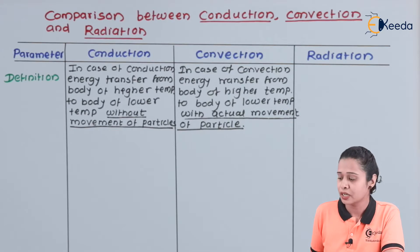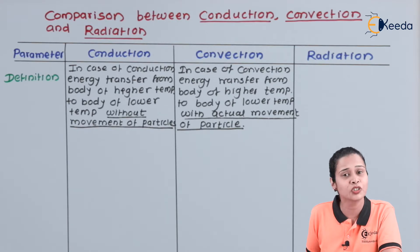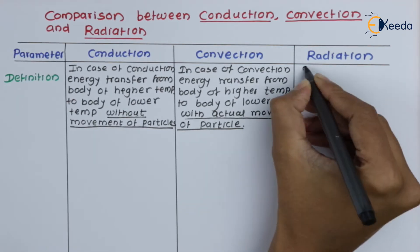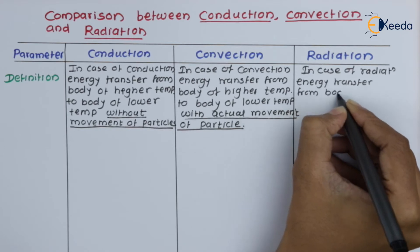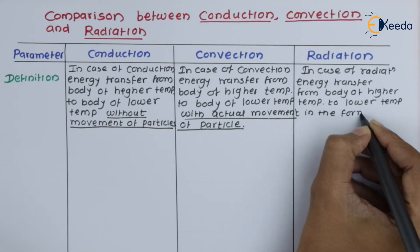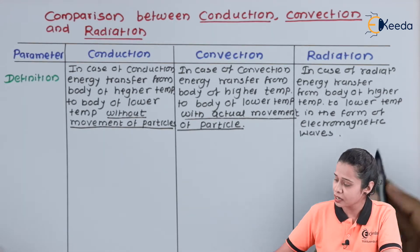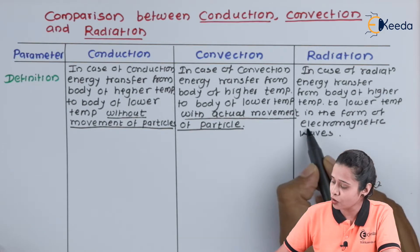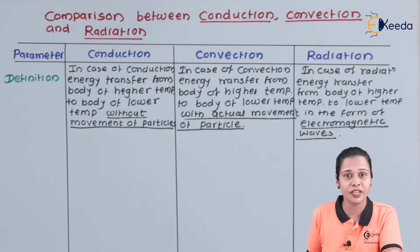In case of radiation, it is the process in which energy transfers from a body of higher temperature to lower temperature, but there is no movement of particle. Actually, there is no medium present. There is an energy transfer in the form of electromagnetic waves. So in case of radiation, the important point is energy transfer in the form of electromagnetic waves. This covers the definitions of conduction, convection and radiation.